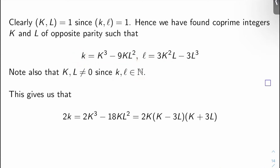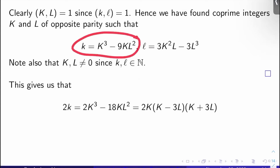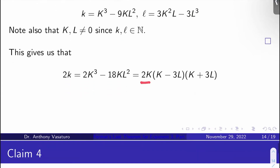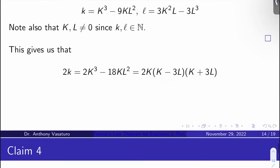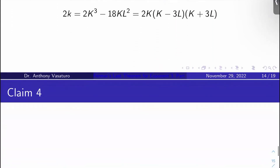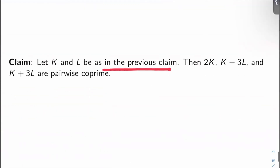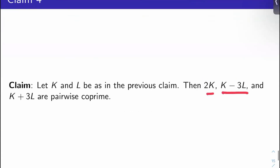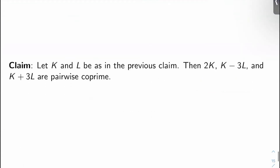Taking the equation for little k and multiplying both sides by 2 gives 2K equals 2 big K cubed minus 18 big K big L squared, which factors as 2 big K times (big K minus 3 big L) times (big K plus 3 big L). So Claim 4: let big K and big L be as in the previous claim; then 2 big K, (big K minus 3 big L), and (big K plus 3 big L) are pairwise co-prime.